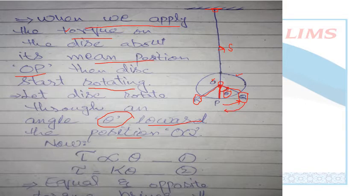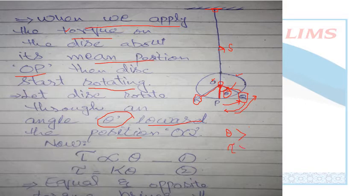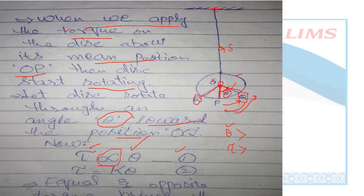When theta is maximum, it means we have provided maximum torque to the disk. From this relation we can say that torque and theta are directly proportional to each other — torque is directly proportional to theta (Equation 1). When we remove the proportionality sign, a proportionality constant k is introduced: torque = k·theta. This is for the case when we looked at torque on one side only — the right side. This is Equation 1.